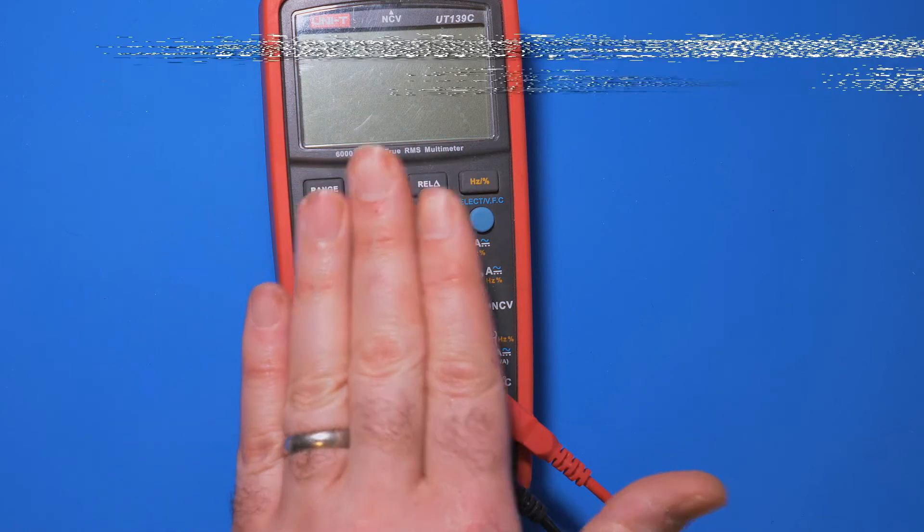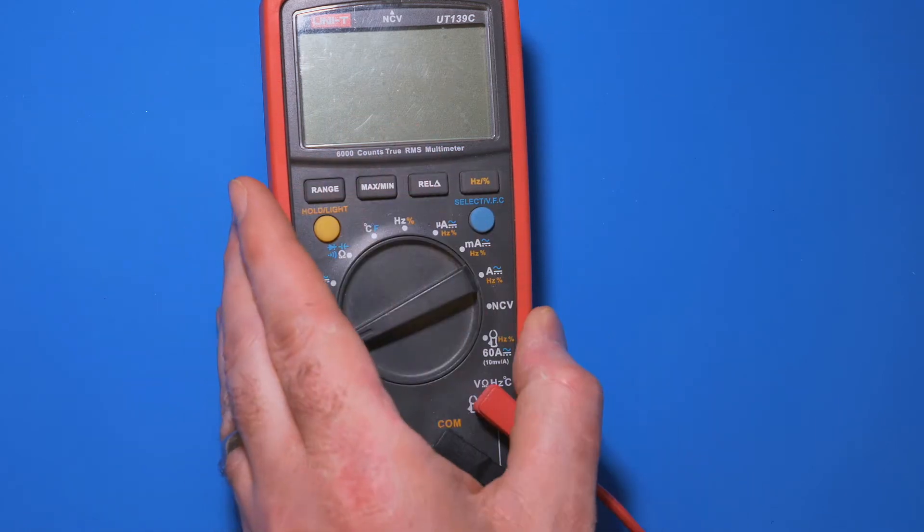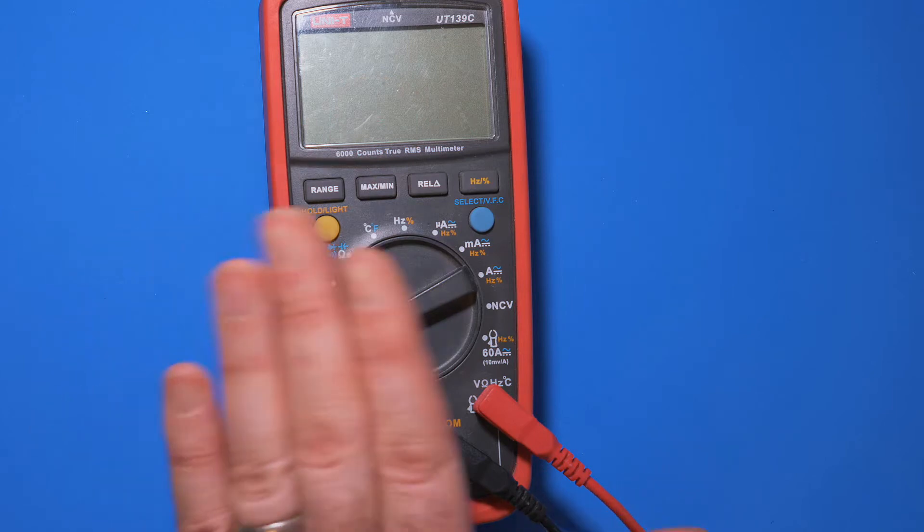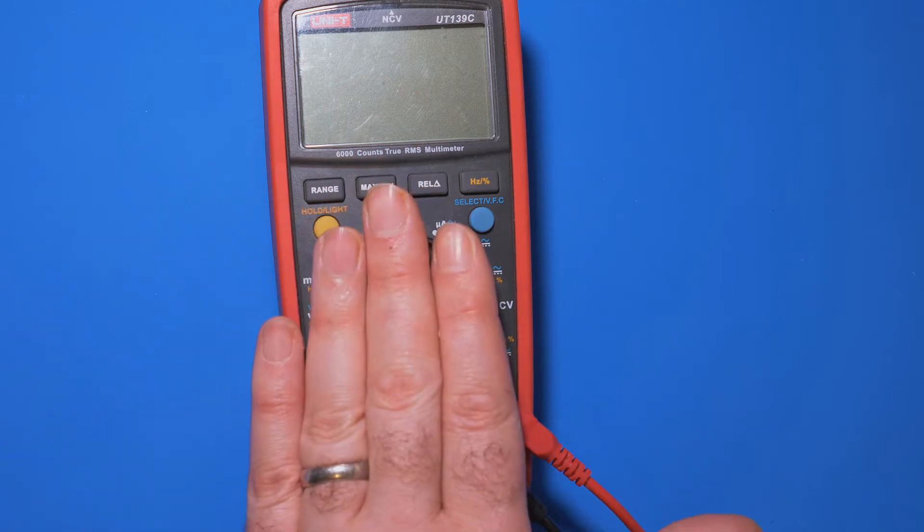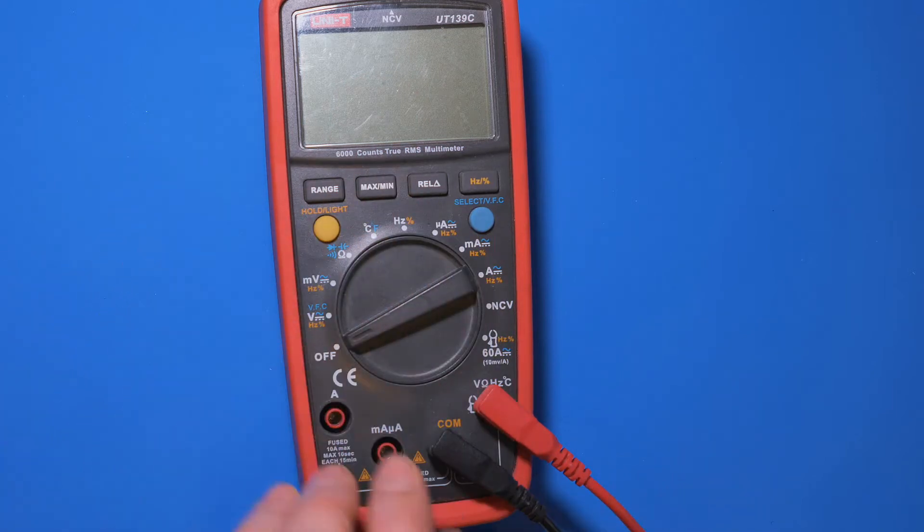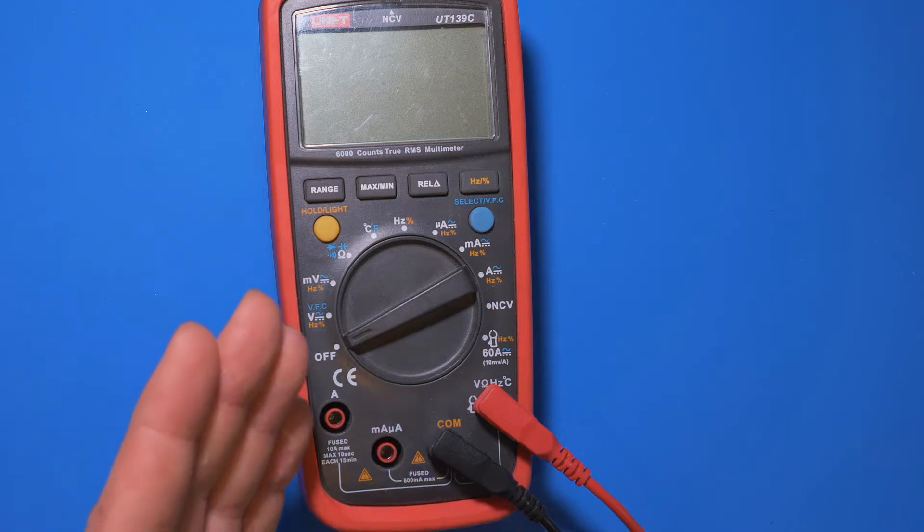And this here is my Uni-T UT139C. I've used lots of multimeters in my past and I've settled on this one because it is a really good device. It's good for not only low voltage work, but also for high voltage mains applications as well.